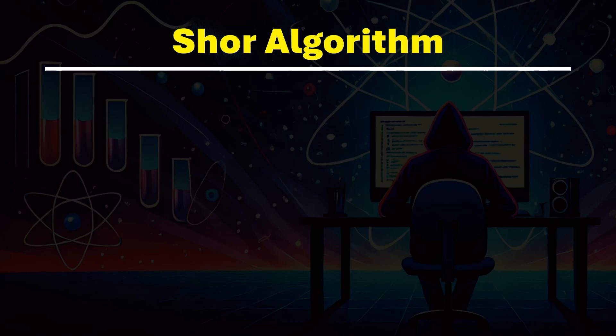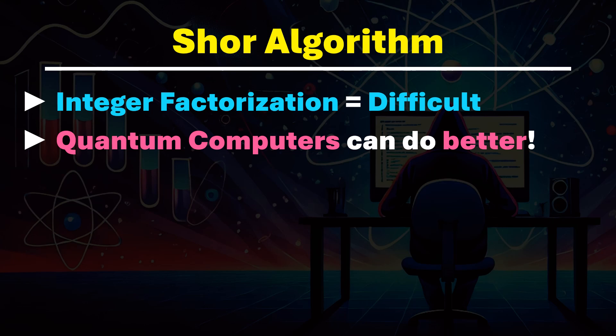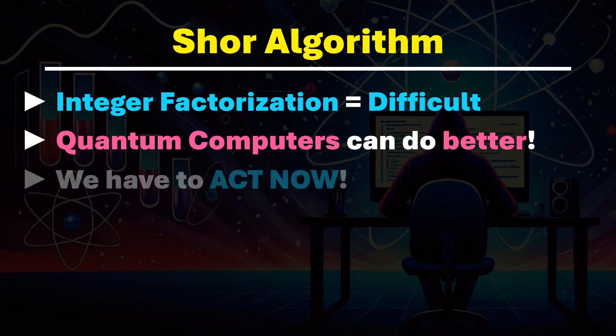Classical computers struggle with factoring large prime numbers, but with a quantum computer that has a sufficient number of qubits, factorization can be done much faster — so fast that we are no longer talking about centuries of computation time, but a much, much shorter period. Therefore we need to start thinking about post-quantum algorithms now to protect ourselves from attackers with quantum computers, and we need to do this sooner rather than later, because with each passing day our well-guarded secrets are increasingly at risk.